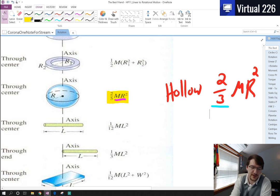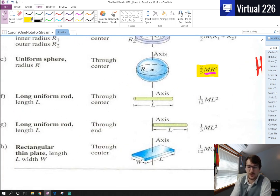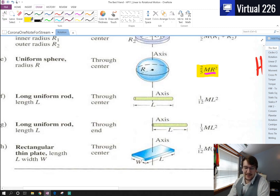Notice how all of these terms have an MR²; it's just a matter of what coefficient is in front. For a uniform rod with the axis in the center, it's one-twelfth. If we switch that axis to the edge, it becomes one-third. It depends on what you're rotating around and how your mass is distributed around that rotation axis.